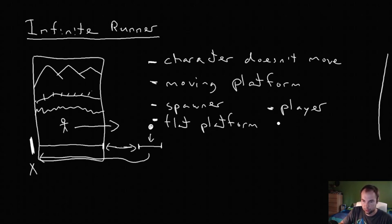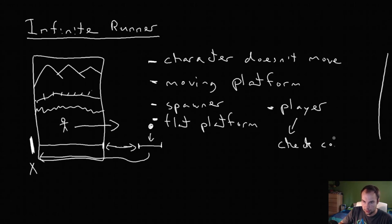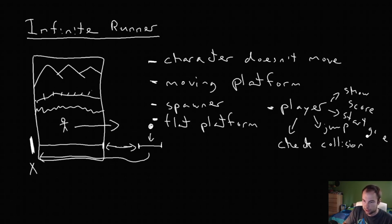Once again the player doesn't move so the player will have a few tasks. He's going to have to check for collisions, he's going to have to jump. I'm going to cram a lot of things into the player so he's actually going to show score as well and I think I'm also going to make him start the game. So the player is going to have control of when the game's starting and when it's paused. So that brings me actually to another point - how do we get it so we have the main menu and the player and the game all in one room?